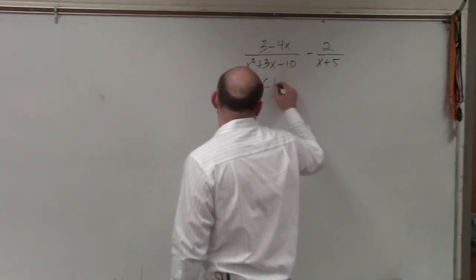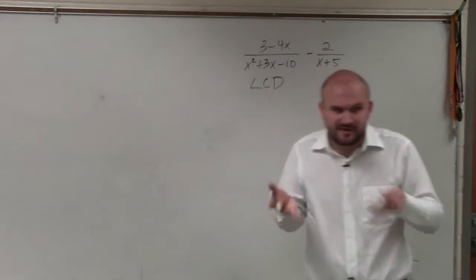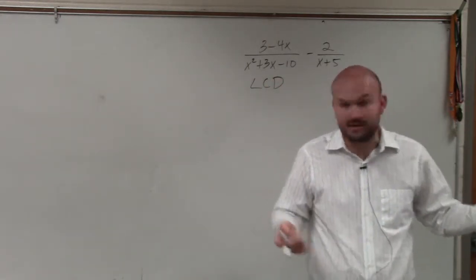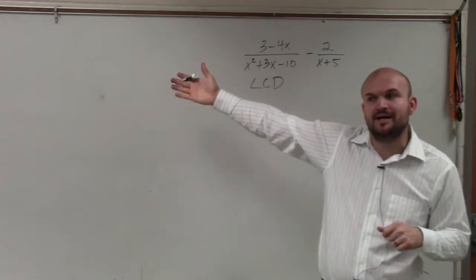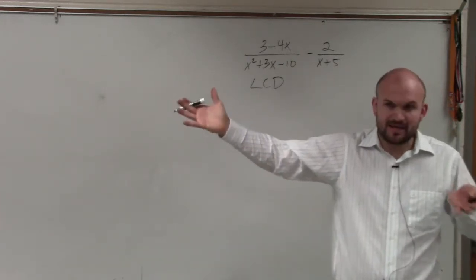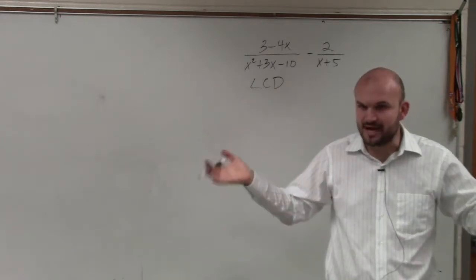When determining the least common denominator, it's very simple to just say whatever the two denominators are, that's always your least common denominator. But as you guys remember, when we had 5x and 3x cubed, or 3x squared, just multiplying the denominators is not always the least common denominator.